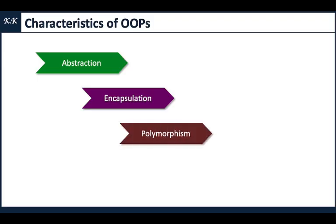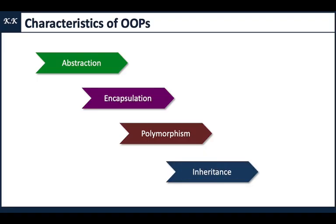Next is polymorphism. Polymorphism means more than one form — for example, method overloading and constructor overloading. Polymorphism can be runtime or compile-time. Compile-time polymorphism includes method overloading and constructor overloading, while runtime polymorphism is method overriding, which is part of inheritance. Inheritance is one of the important concepts of OOP — it means a child class can acquire the properties of a parent class. We will see all these in detail in upcoming videos.